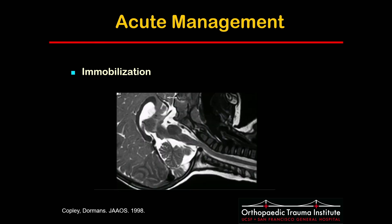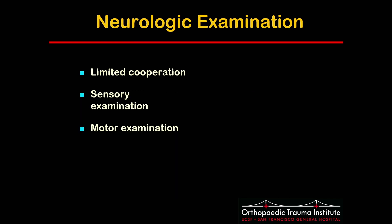If a pediatric spine board is not available, you could stack two boards in a staggered fashion to allow extra room for the occiput. This MRI demonstrates what could happen if the child's head is forced into flexion in the setting of an injury. Detailed neurologic examination should be performed, but in patients under the age of three, there could be limited cooperation. However, you still need to get a thorough sensory and motor examination.